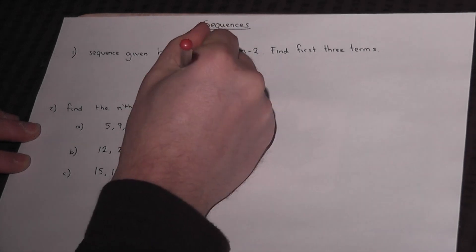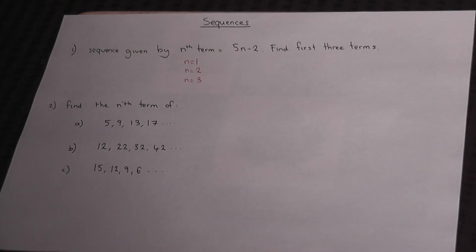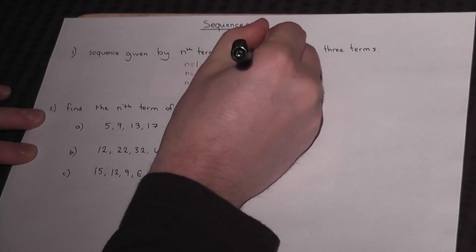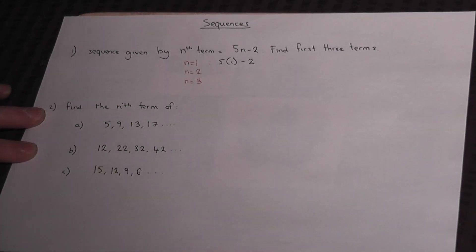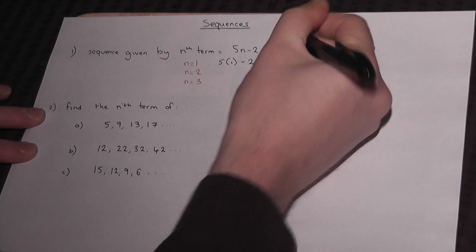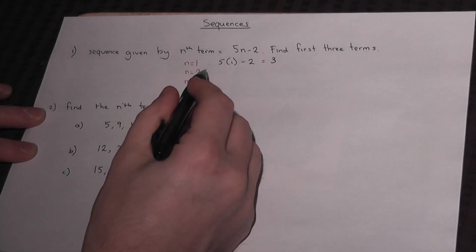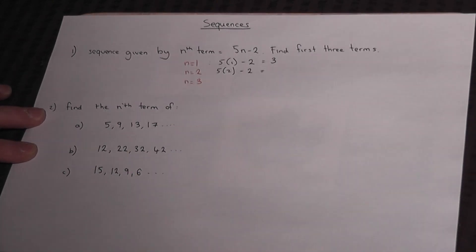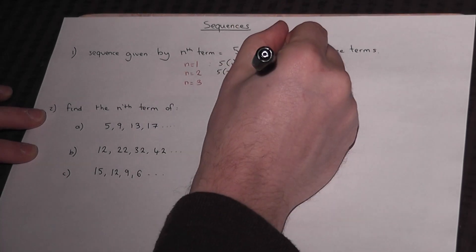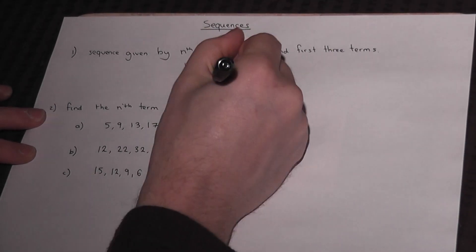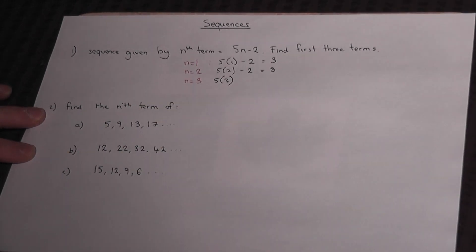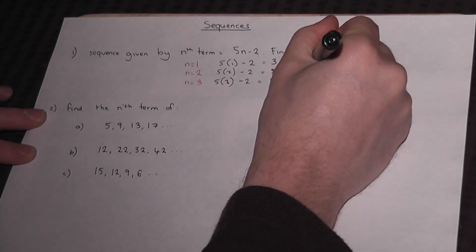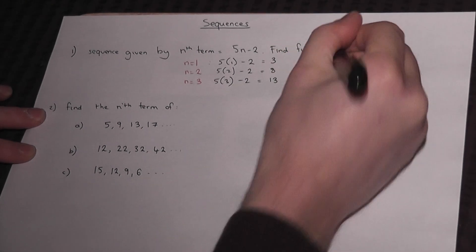So for example, the first term would be 5 times 1 take away 2: 5 times 1 is 5, take away 2 is 3. Then the second term, n equals 2: 5 lots of 2 take away 2, 5 times 2 is 10, take away 2 is 8. The third term: 5 lots of 3 is 15, take away 2 equals 13. So the first three terms are 3, 8, and 13.